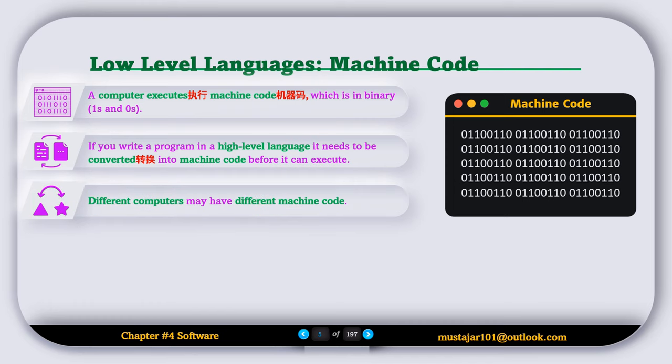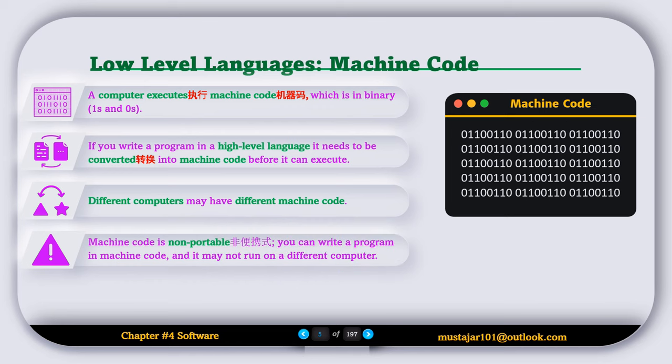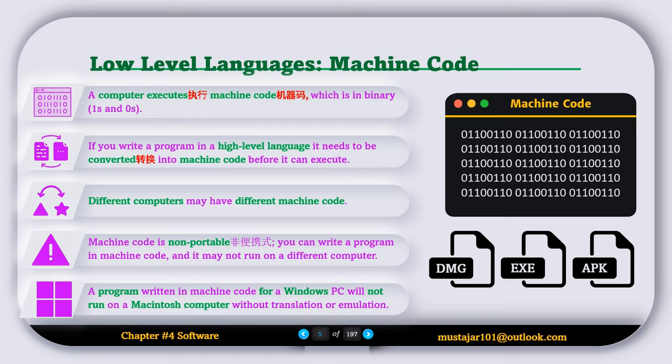Different computers may have different machine code. Machine code is non-portable. You can write a program in machine code and it may not run on a different computer. For example, a program written in machine code for a Windows PC will not run on a Macintosh computer without translation or emulation.